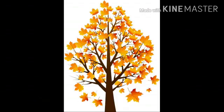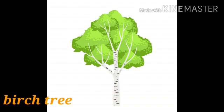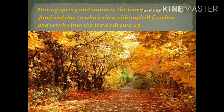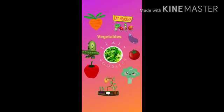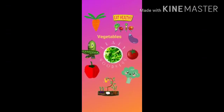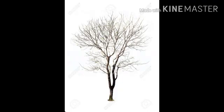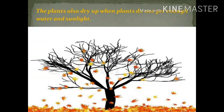Some examples of Deciduous trees are Oak tree, Maple tree and Burge tree. The two main reasons behind shedding of leaves are: first, during spring and summer the leaves make a lot of food, due to which their chlorophyll finishes, resulting in the leaves drying up. Another reason could be when the plants do not get enough water and light.